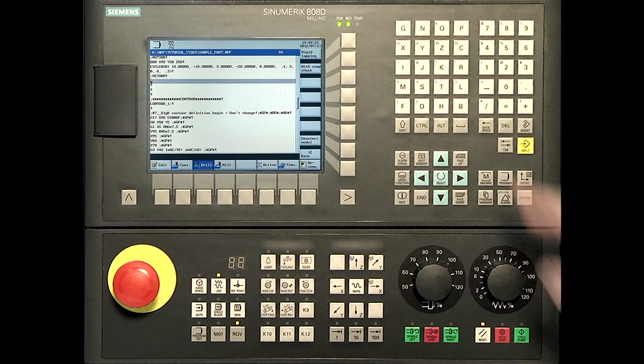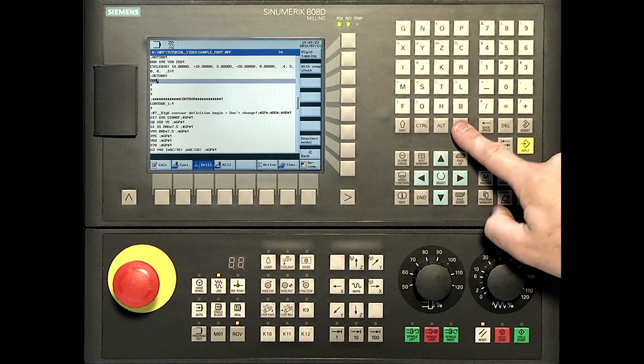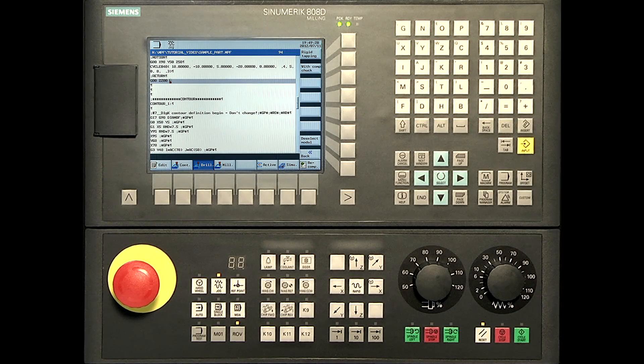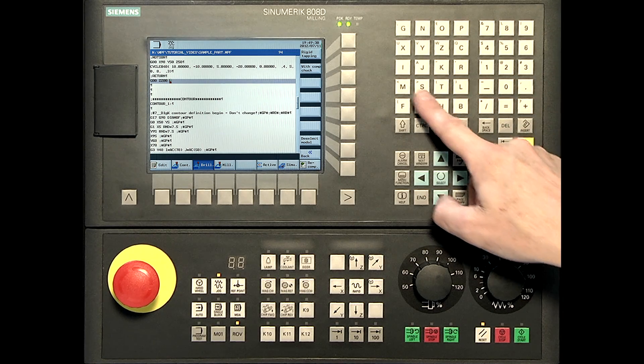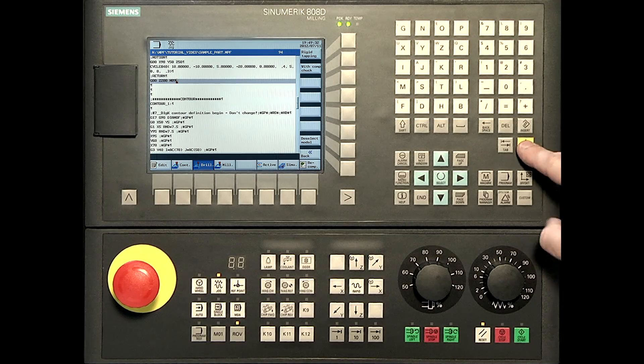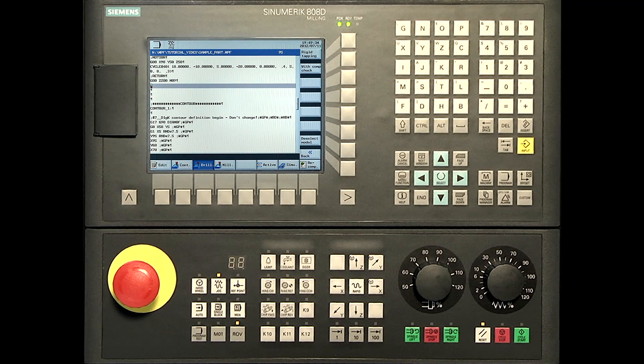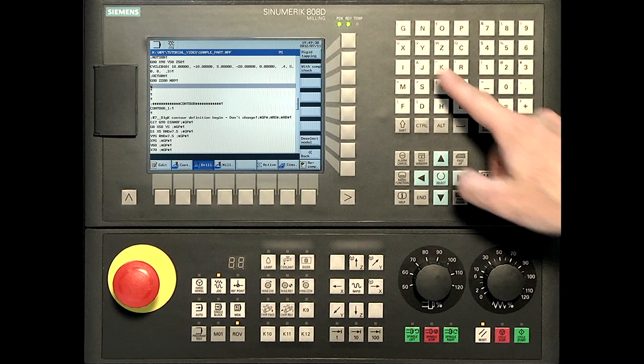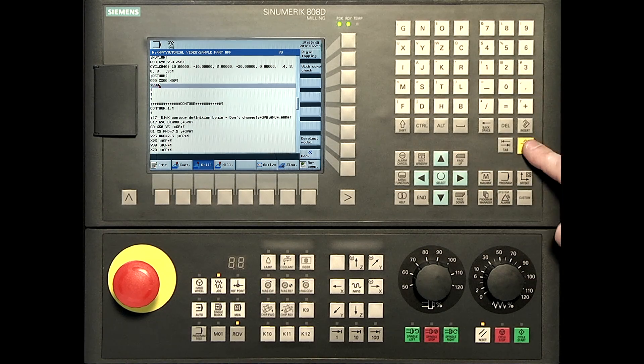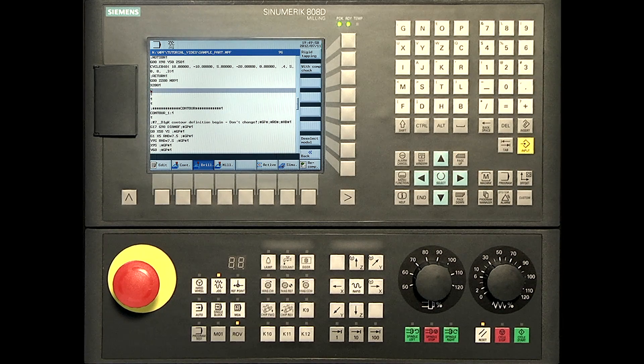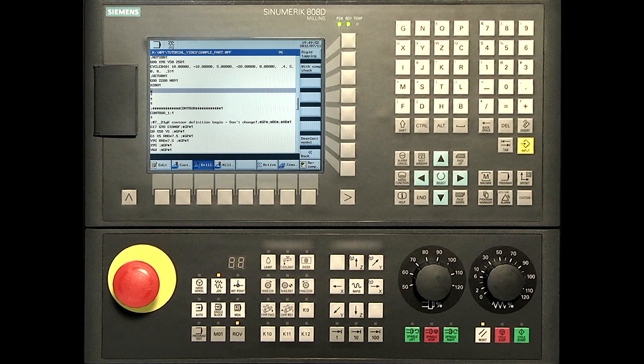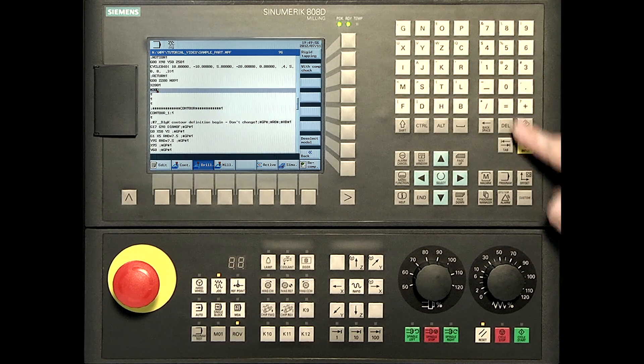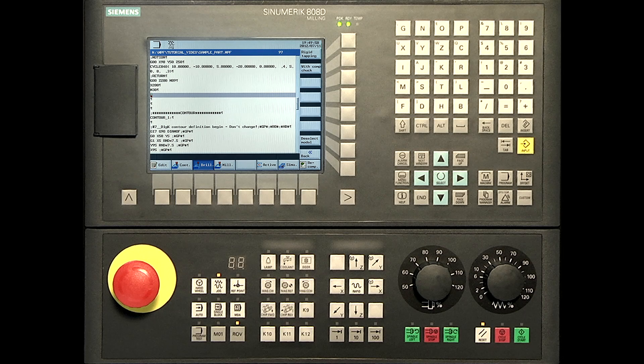G00, Z200, M09. Rapid movement to a safe position, deactivating the coolant. X200, moving the X axis to a position nearby the door. M30, program reset.